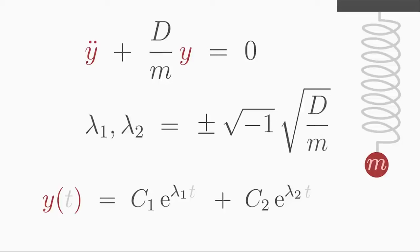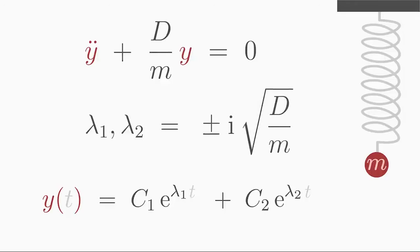Square root of minus 1 is defined as the imaginary unit, a number which we denote by the letter i. That's all you need to know about imaginary numbers. Let us denote square root of D over m shortly as omega.